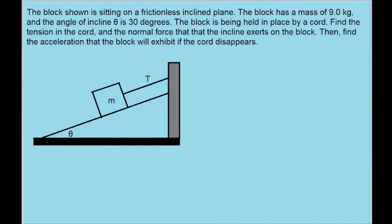In this problem, we have a block sitting on an inclined plane, and it's held at rest by a cord attached to a wall. The first part of the problem asks us to describe the forces at play here, in particular the tension and the normal force. So let's do it.